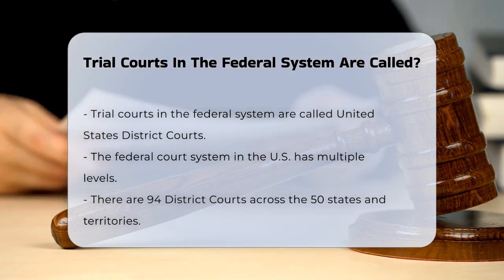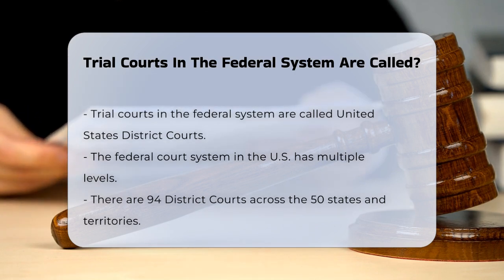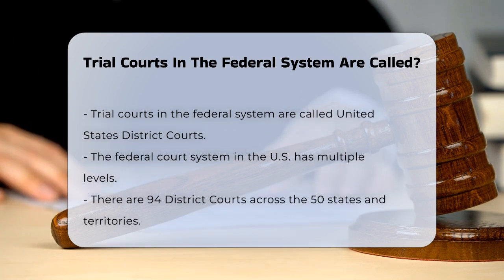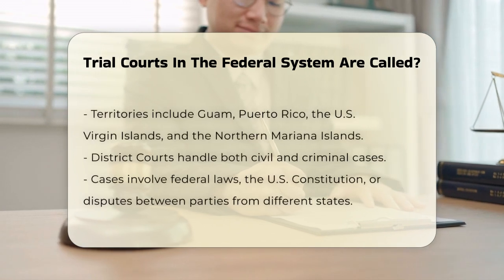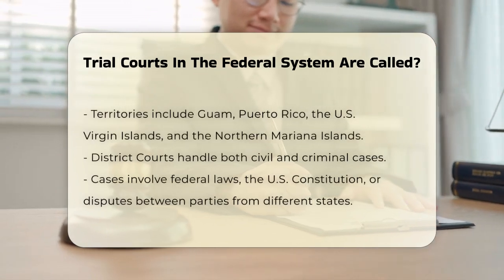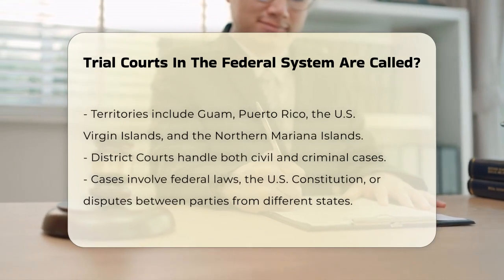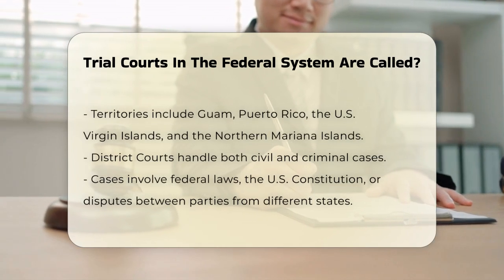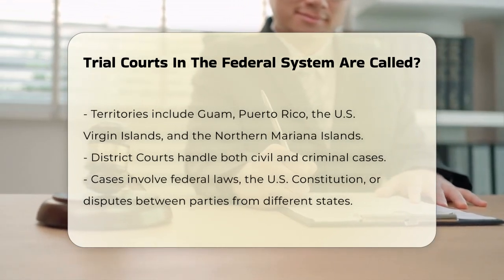In the United States, the federal court system is divided into several levels, and the trial courts are the foundation of this system. These courts are known as the United States District Courts. There are 94 of these district courts spread across the 50 states, the District of Columbia, and several U.S. territories like Guam, Puerto Rico, the U.S. Virgin Islands, and the Northern Mariana Islands. Each of these courts is responsible for handling trials within the federal system, both civil and criminal cases.